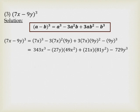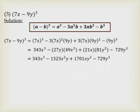Calculating each term: (7x) cubed is 343x cubed. Then 3 times (7x) squared is 3 times 49x squared, times 9y gives minus 27 times 49 x squared y, which equals minus 1323x squared y. Then 3 into 7x is 21x, times (9y) squared which is 81y squared, gives plus 21 times 81 equals 1701 xy squared. And (9y) cubed is minus 729y cubed.